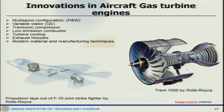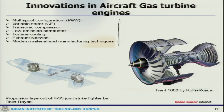When we move to innovations in aircraft gas turbine engines — from 1903 to 1930 with turbojet and then 1950 onwards — today we have very good development: multi-spool configurations, variable stators, transonic compressors, low-emission combustors, turbine cooling, exhaust systems, and modern materials and manufacturing. All this happened because of development on the technological front — basic fluid mechanics, thermodynamics, aerodynamics, and materials science — bringing us to the sophisticated engines we see flying today.